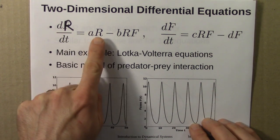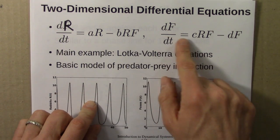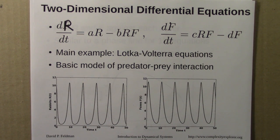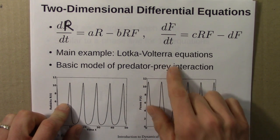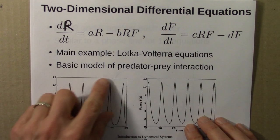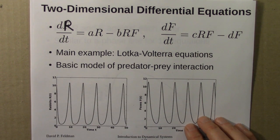R, the rabbits, depend on the rabbits and the foxes, and the foxes depend on the rabbits and the foxes. So we'd say they're coupled. The fates of the rabbits and the foxes are intertwined. These are known as Lotka-Volterra equations, in ecology and perhaps in economics as well, the basic model, the most simple model of a predator-prey interaction.